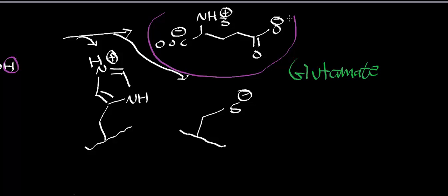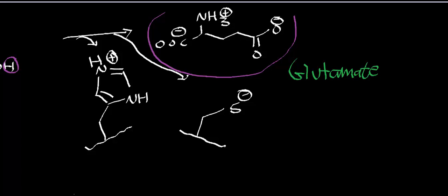Glutaminase then hydrolyzes off ammonia and in the process generates glutamate. The glutamate can then be catabolized further into alpha-ketoglutarate and one more ammonia molecule.